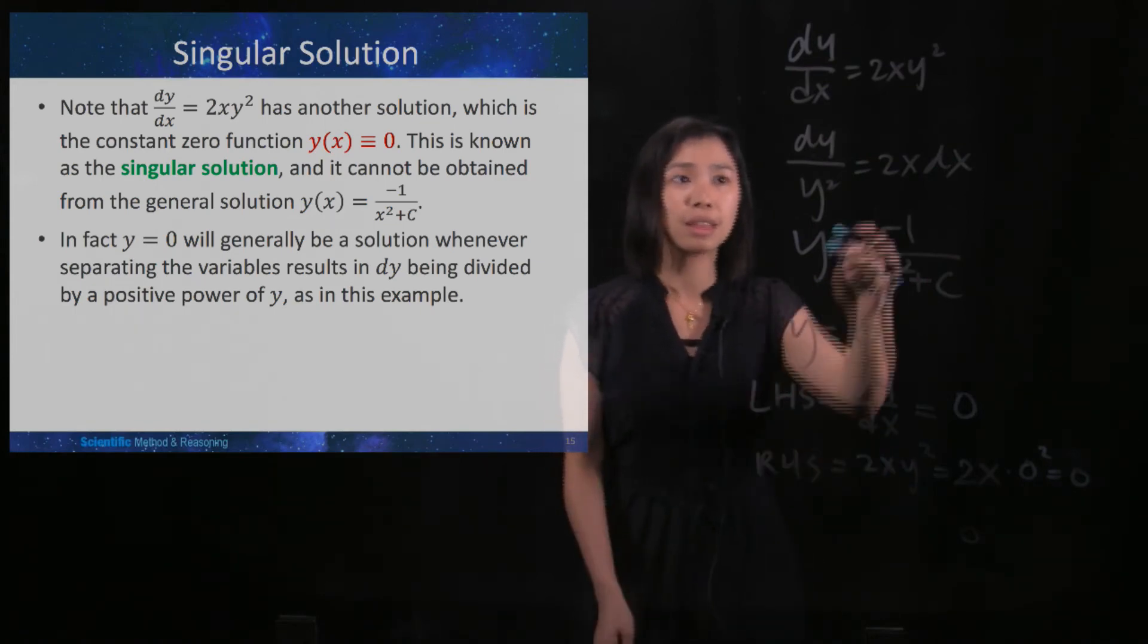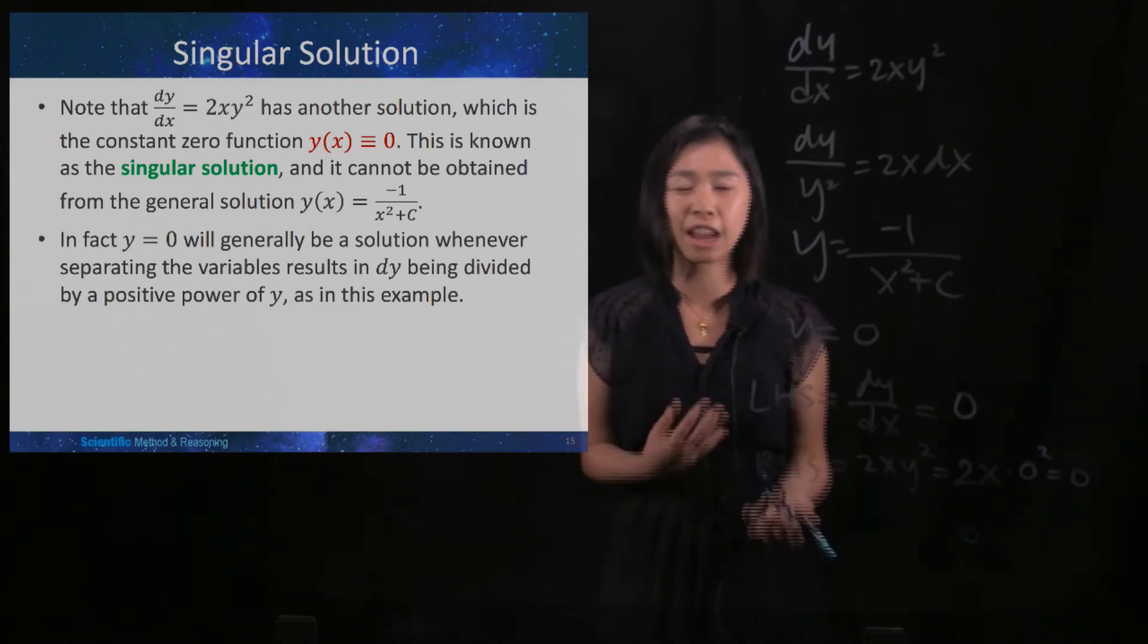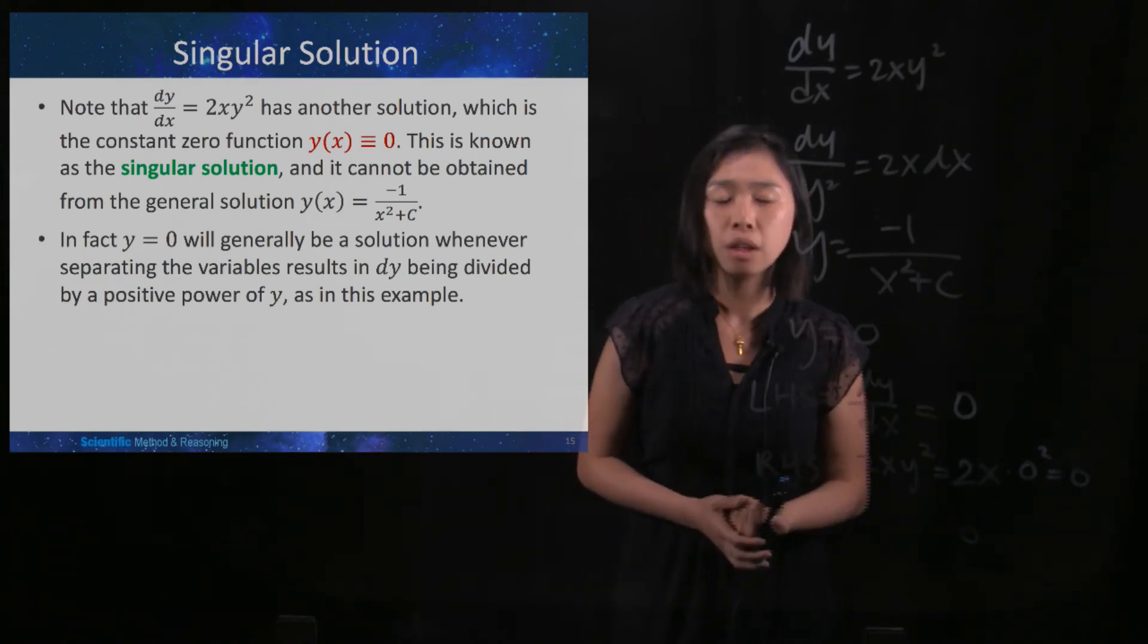However, this y = 0 cannot be found from your general solution. You may be scared, but when would it happen?